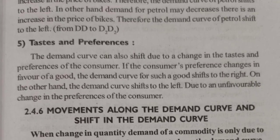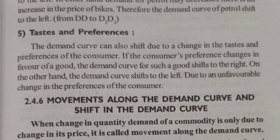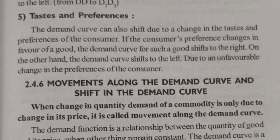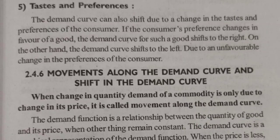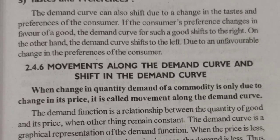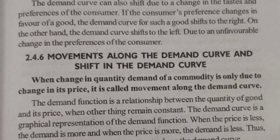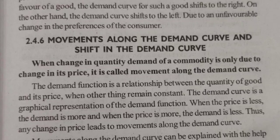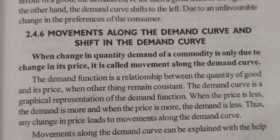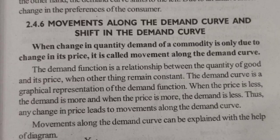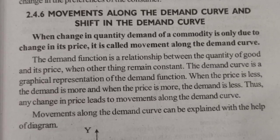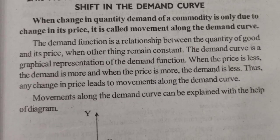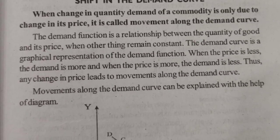There is an important distinction between movement along the demand curve and shift in the demand curve. Movement along the demand curve occurs when the change in quantity demanded of a commodity is due to a change in its price. A shift in demand curve occurs when price remains the same but taste and preference of the customer changes.